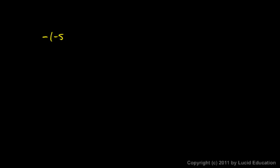Think about the negative sign in these examples. Negative negative 5 — if you think of that as the opposite of the opposite of 5 — is just 5. Or the opposite of negative 5. If you add an additional negative sign, negative negative negative 5, with an additional layer of parentheses nested, this comes out to negative 5. So: negative 5 — the opposite of that is positive 5 — and the opposite of that is negative 5.